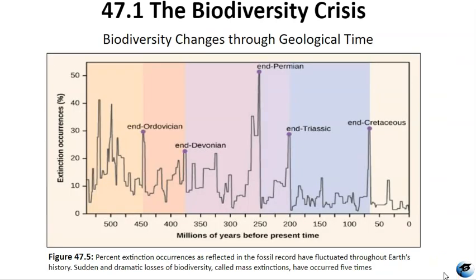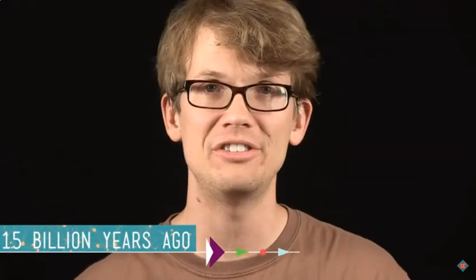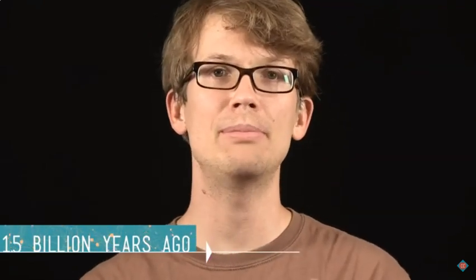Biodiversity on earth has fluctuated greatly throughout geologic time. There is a natural ebb and flow in the big picture of evolution and speciation — when speciation rates surpass extinction rates, we see an increase in the number of species, and vice versa. Figure 47.5 illustrates a number of extinction events that have occurred in Earth's history as reflected in the fossil record. By 1.5 billion years ago, we start seeing multicellular eukaryotic organisms in the fossil record, the very first of them probably being algae.